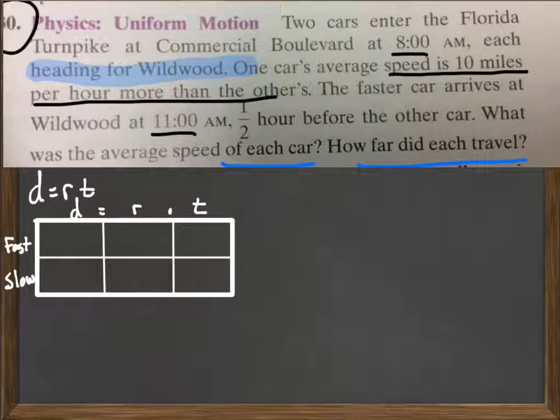So because they started at 8, got there at 11 a.m., the faster car took three hours. The slower car took three and a half hours. So what we want to do is go into this problem and label down what we know. Well, one car is 10 miles per hour faster. So the faster car will be 10 miles per hour faster than the slower car.